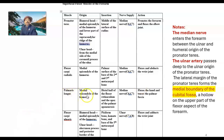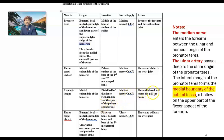Palmaris longus inserts into the distal half of the flexor retinaculum and the apex of the palmar aponeurosis. Nerve supply: median nerve. Root value: C6, C7. Action: flexes the hand and tenses the palmar fascia.